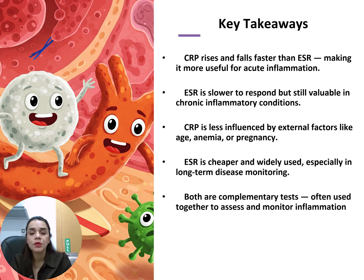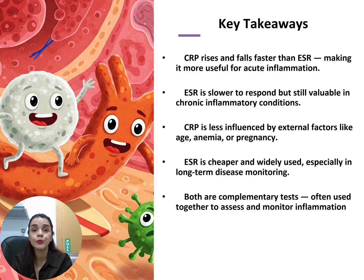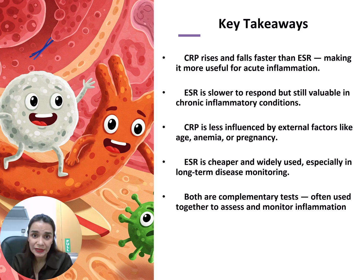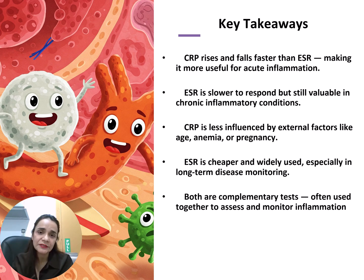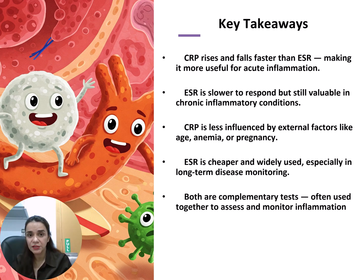Both ESR and CRP are complementary tests that can be used together. There are also other markers like procalcitonin, which is a very good inflammatory marker for bacterial sepsis. It has a very high negative predictive value — when it is normal, the probability of sepsis is very low. When treating a patient with antibacterials, procalcitonin is a good marker for monitoring treatment effectiveness. If it comes down 50% every day, the antibiotic is working. If not, you may need to change the antibiotic.